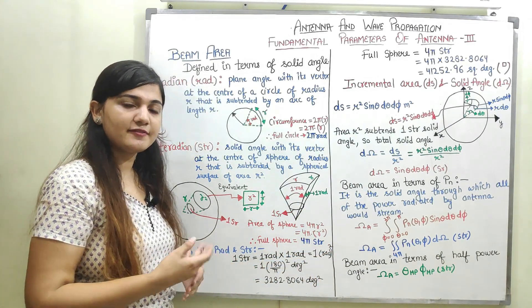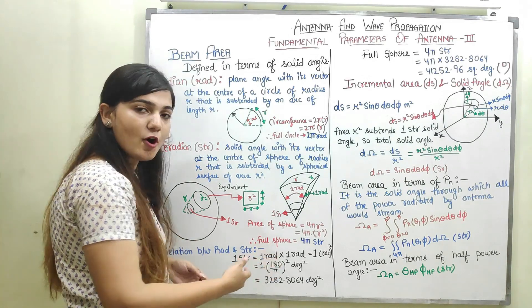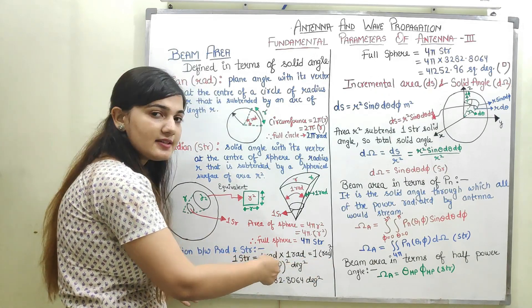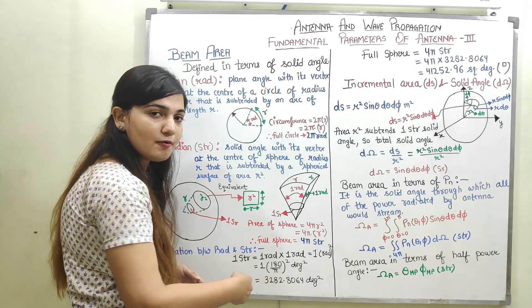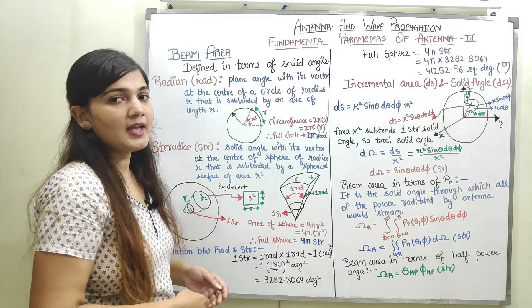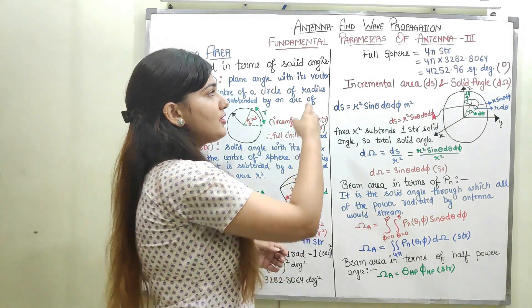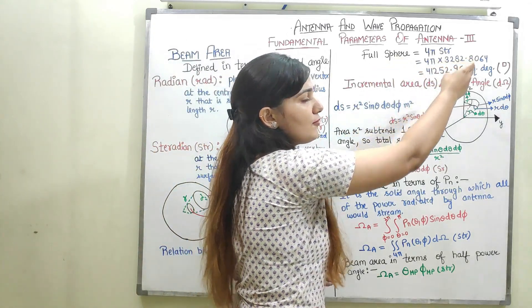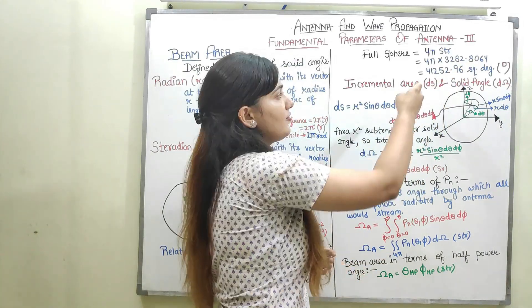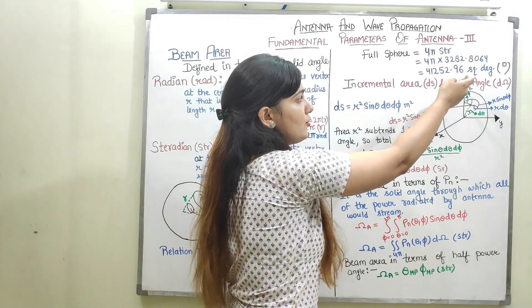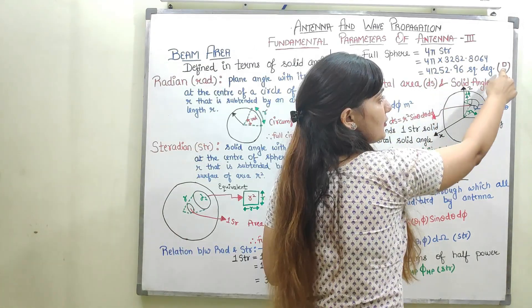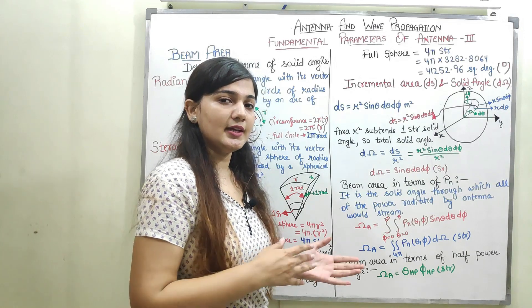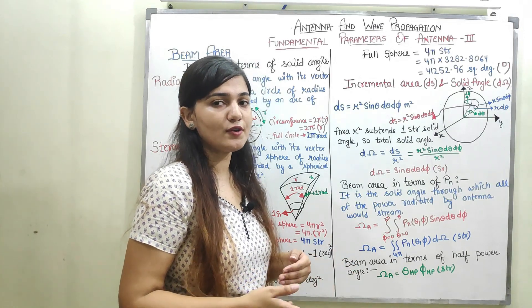We know that 1 radian equals 180/π degrees. Therefore, 1 radian² equals (180/π)² square degrees, which is 3282.8064 square degrees. Since the full sphere contains 4π steradians, the full sphere covers 4π × 3282.8064 = 41252.96 square degrees.